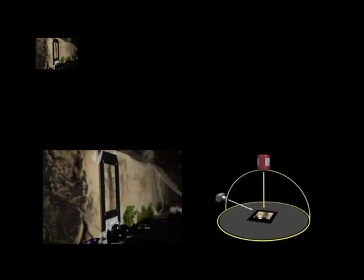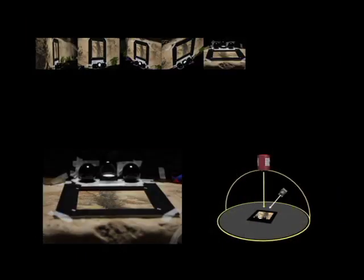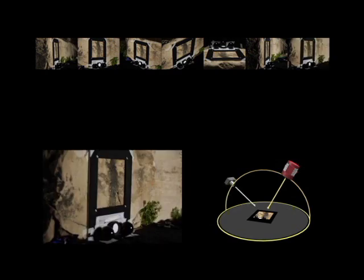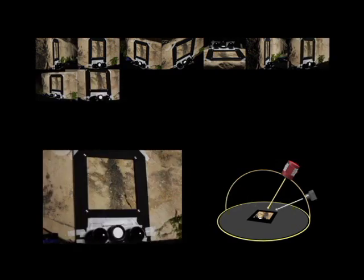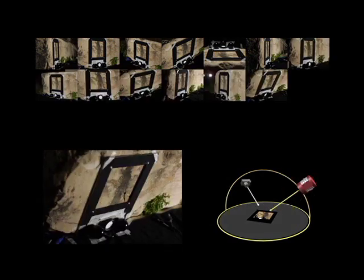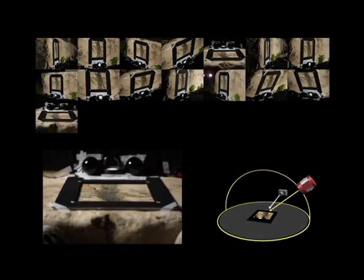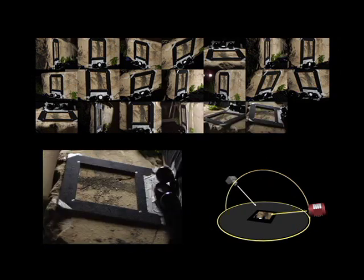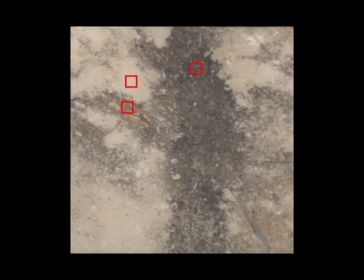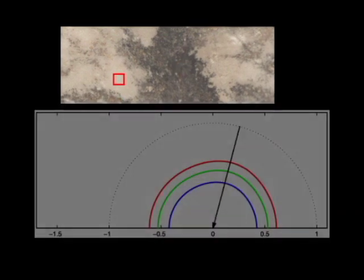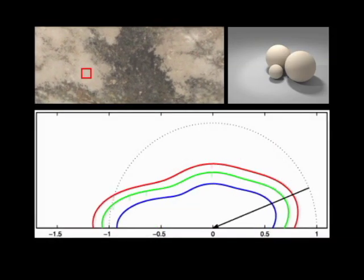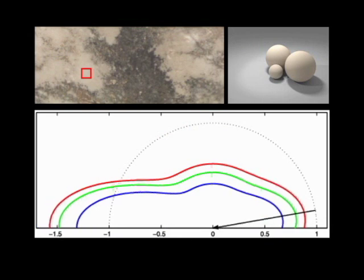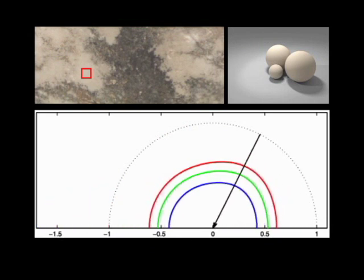We photographed the sample at night from a variety of viewing and lighting directions, taking care to adequately sample the specular and retroreflective directions. We then fit the isotropic Lafortune reflectance model to the tan, brown, and black samples within the area. The three cosine lobes derived for each sample correspond to each surface's Lambertian, specular, and retroreflective components.